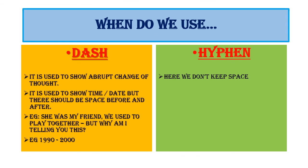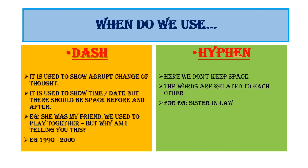Dash and hyphen may look the same, but the usage is different. With a dash, you keep a space before and after. With a hyphen, there is no space — the words are related to each other and correspond. For example: 'sister-in-law', 'part-time', 'self-made'. The hyphen connects related words directly without any space.